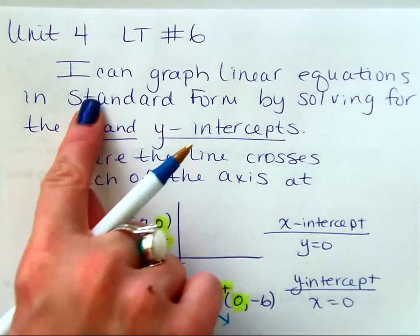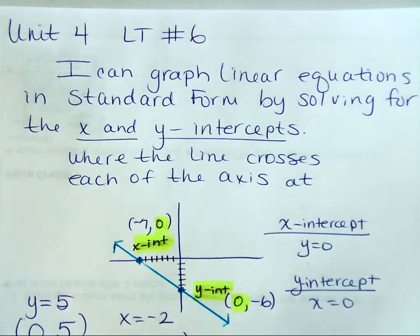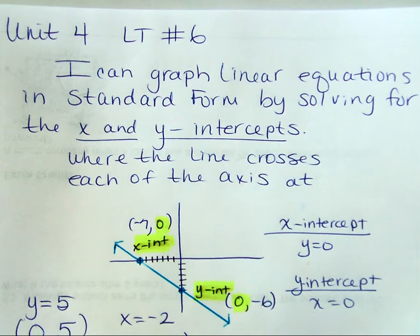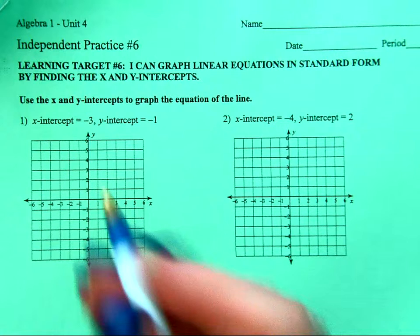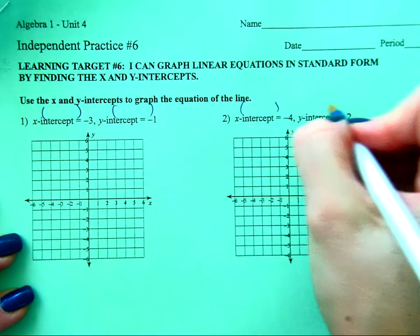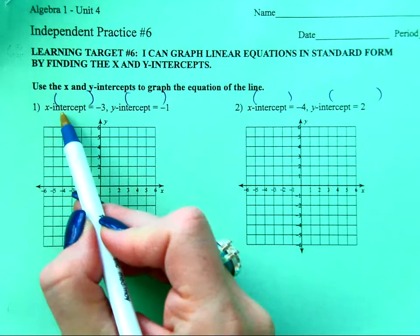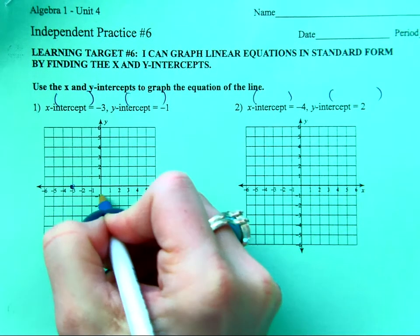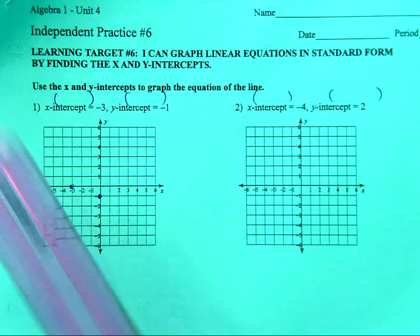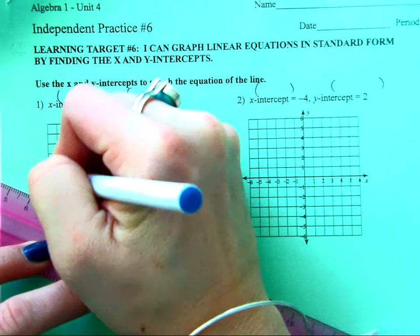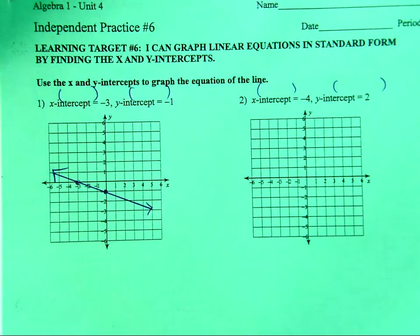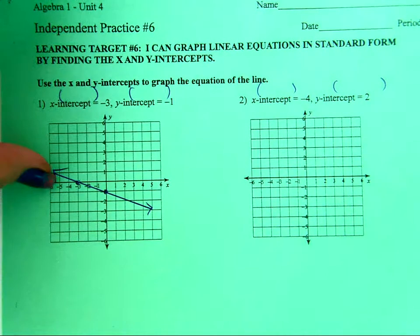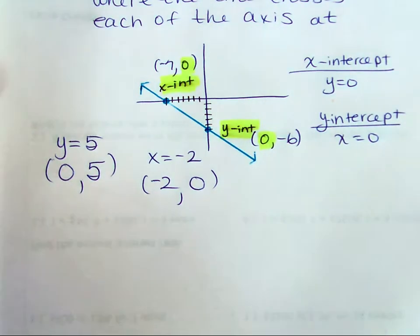I had somebody very confused last hour, and what they did is after they found each of their intercepts, they made this an ordered pair. They made this negative 2 comma 5. No. Each of these is a separate point, right? You don't make this one point. Your x value is not negative 2 and your y value is not 5. It's 0, 5, negative 2, 0. Got it? So, let's go back and reread the learning target. It says, I can graph linear equations. We haven't talked about standard form yet, but do you know what x and y-intercepts are? So, if I gave you the x and the y-intercept, could you graph something? Yeah, piece of cake. That's what I'm going to ask you to do on the whole first page.